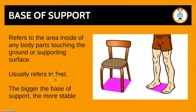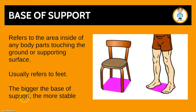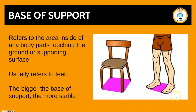Next we have the base of support. This refers to the area inside any of the body parts that are touching the ground or the supporting surface, which usually refers to the feet. A very simple concept: the bigger the base of support, the more stable something or someone is. We can see in this image that this chair has four legs — four things touching the ground — therefore it has a large base of support and is very stable. This person here has two feet touching the ground and has a smaller base of support, so would be theoretically less stable.